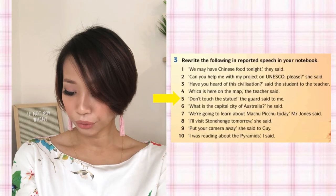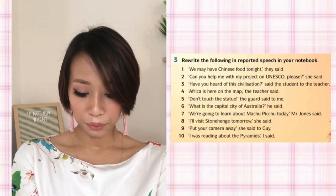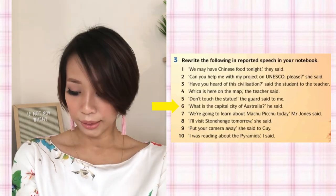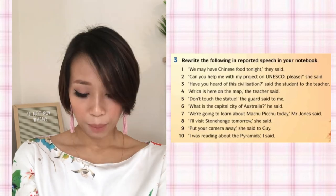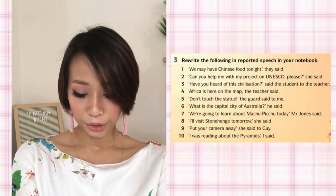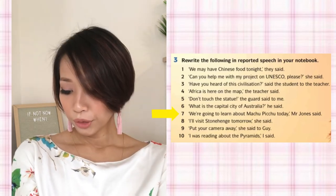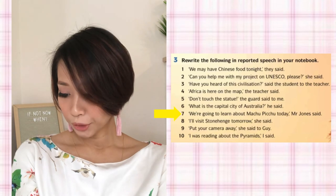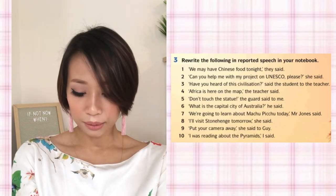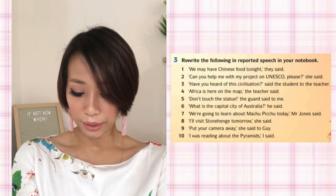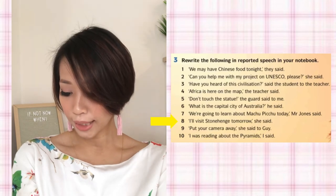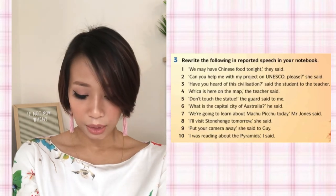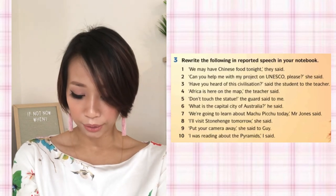Number 5: 'Don't touch that statue,' the guard said to me. Jangan sentuh patung itu, pengawal itu kata pada saya. Number 6: 'What is the capital city of Australia?' he said. Apakah ibu kota Australia, dia kata. Number 7: 'We're going to learn about Machu Picchu today,' Mr. Jones said. Kita akan belajar tentang Machu Picchu hari ini, Mr. Jones kata. Number 8: 'I'll visit Stonehenge tomorrow,' she said. Saya akan lawat Stonehenge esok, dia kata.